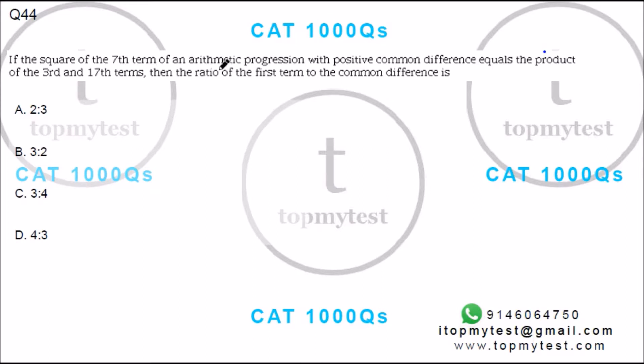There's a question on progressions that came in CAT 2017. It says if the square of the seventh term of an arithmetic progression with positive common difference equals the product of the third and seventeenth terms, then the ratio of the first term to the common difference is how much?